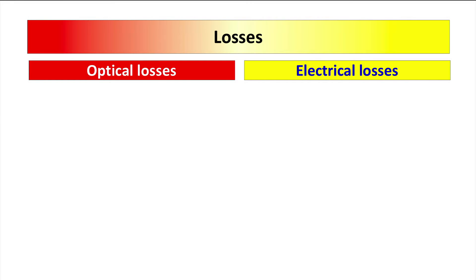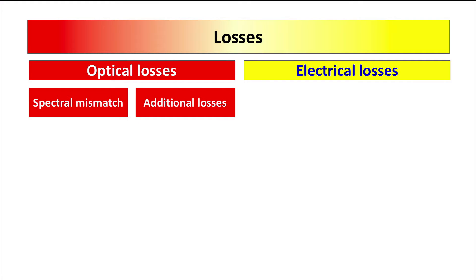Before we go deeper into all the loss mechanisms in a solar cell, let's take a look at an overview of all of them. We can divide loss mechanisms into two big categories: optical losses and electrical losses. Optical losses are related to the absorption, transmission, and reflection losses of the incident light, which can be further divided into spectral mismatch losses and additional optical losses.